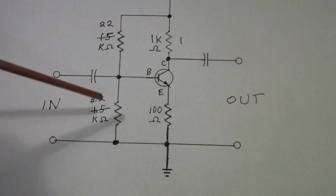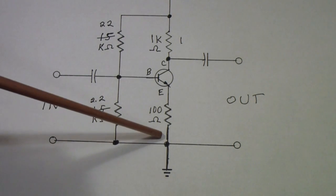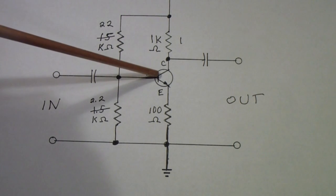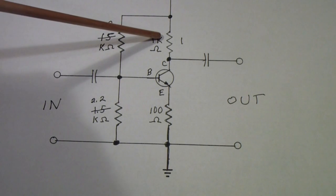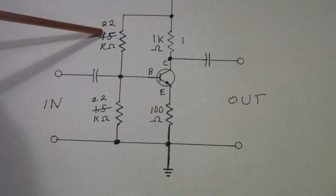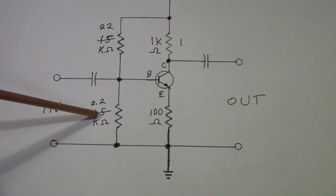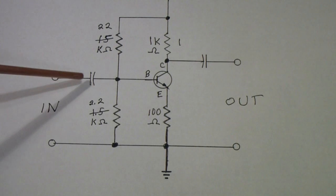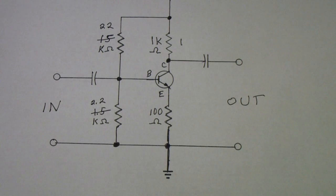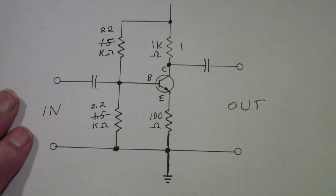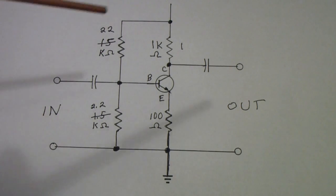Those are the sorts of things that once you understand the basics of determining an operating point, setting up the emitter and collector resistors, finding appropriate bias resistors, and then adjusting the coupling capacitors to get the desired frequency response.